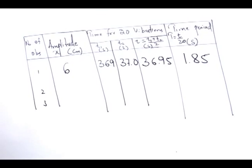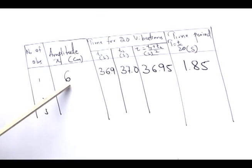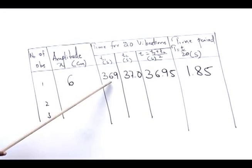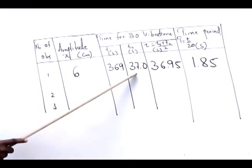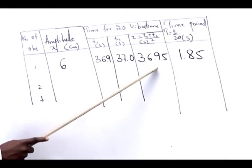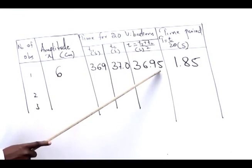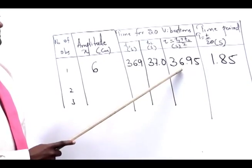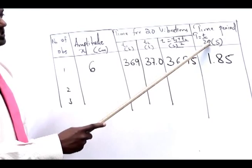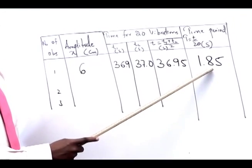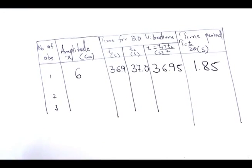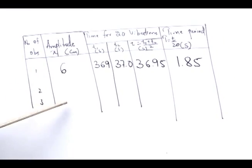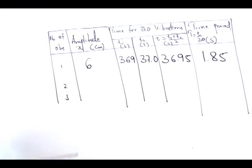The amplitude was 6 centimeters. The time for 20 vibrations was 36.9 seconds the first time and 37.0 seconds the second time. The mean value was 36.95 seconds, and the time period — calculated by dividing mean time by 20 — was 1.85 seconds. We can similarly record two more observations for different amplitudes.